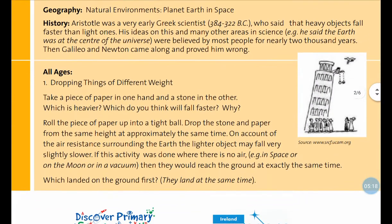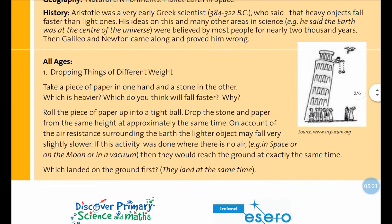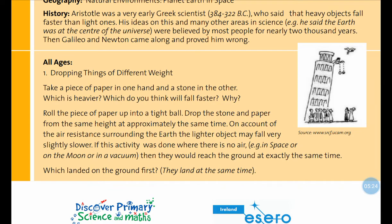Looking at the history section: Aristotle was a very early Greek scientist, around more than 300 years before the birth of Christ — that's nearly 2,400 years ago. He said that heavy objects fall faster than light ones. His ideas on this and many other areas in science were believed by most people for nearly 2,000 years. Then Galileo and Newton came along and proved him wrong. Another thing Aristotle said was that the Earth was at the centre of the universe, and we know that's not true.